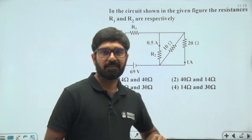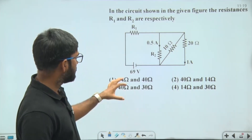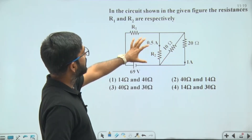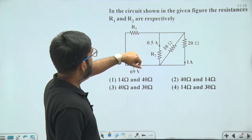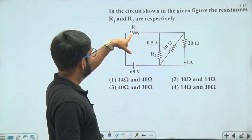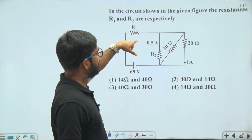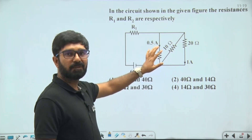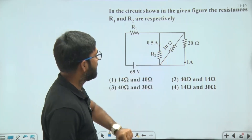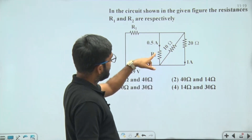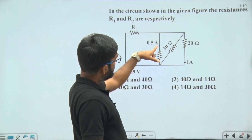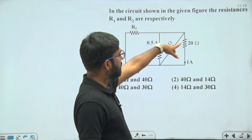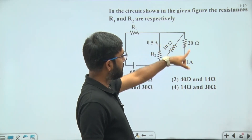In this question, a circuit is given and we have to find out the value of resistance R1 and R2. From the given circuit, the current in R2 is given as 0.5 ampere and the current in the 20 ohm resistance is given as 1 ampere.